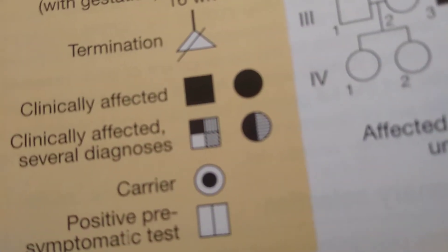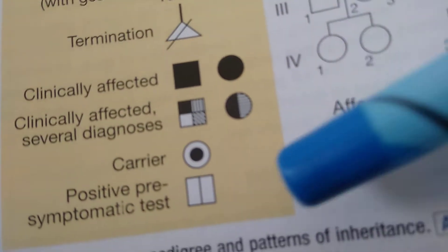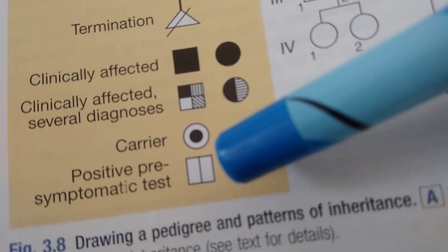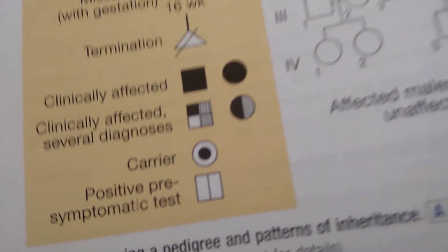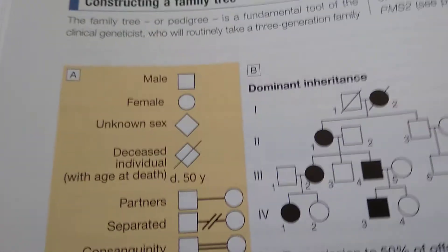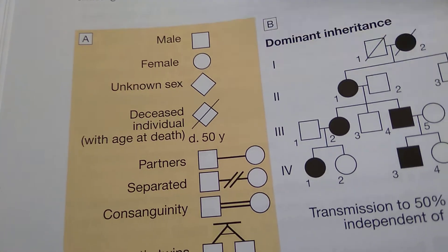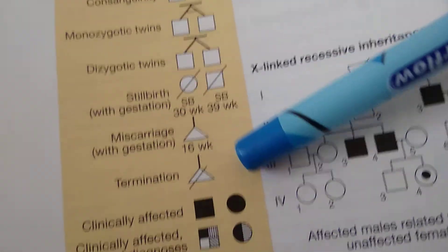At least remember: if it is solidified, then it is clinically affected. If it is just a center part they have marked, then it is a carrier. And then here there is a positive pre-symptomatic test. Again, this becomes a little complex for you, leave that. So these are the symbols you will use in pedigree chart.